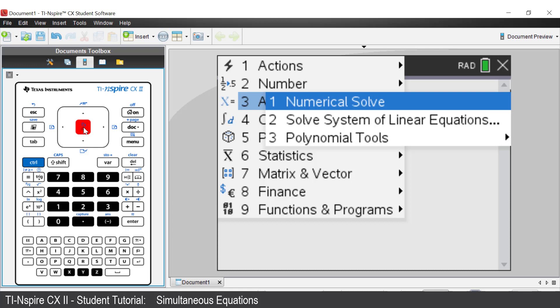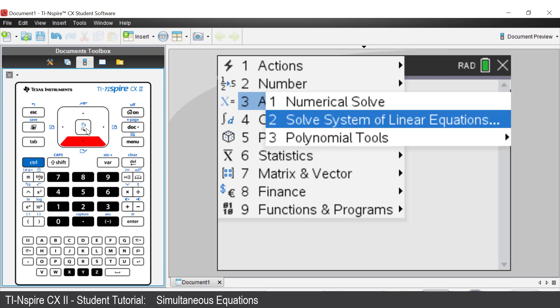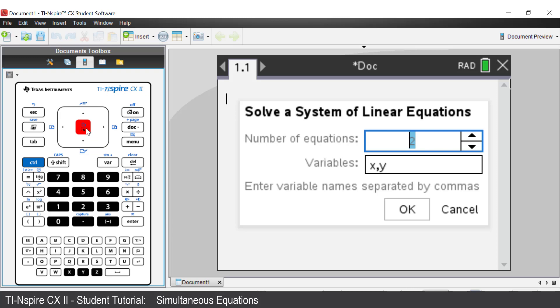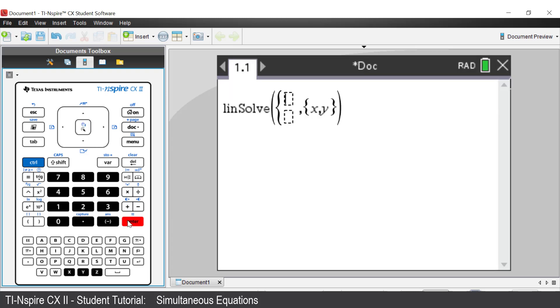Select solve system of linear equations by using the down arrow and pressing enter. The pop-up window shows that the default is two equations with two variables X and Y separated by a comma. Press enter. The template is shown in the calculator application.